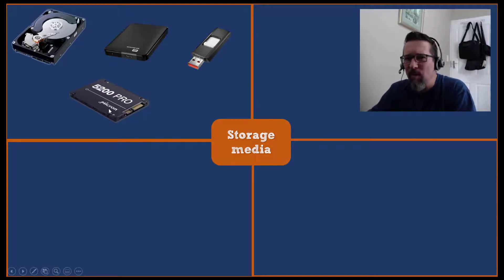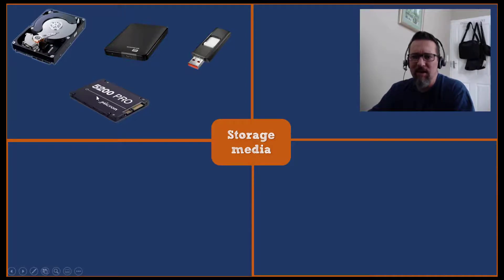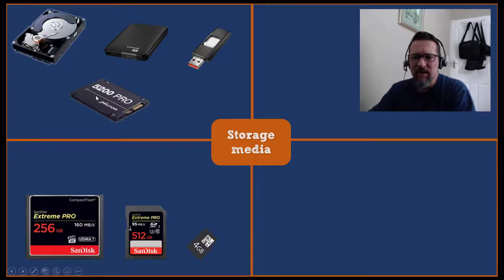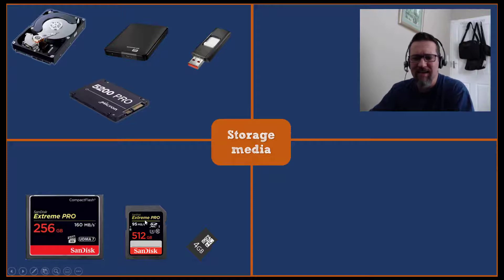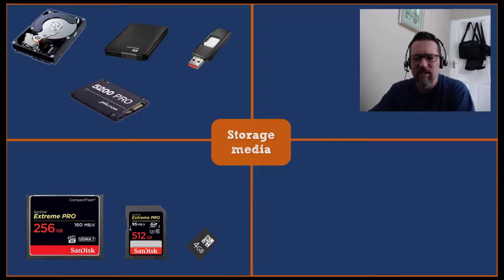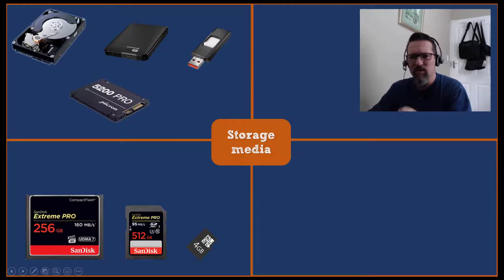And becoming very popular now are SSD drives. Here we have a 500 GB SSD drive — this is an internal drive and they're much, much faster. Here are other storage media we often use for cameras, phones, or tablets: flash cards or compact flash cards, SD cards — SD means Secure Digital — or SDXC. And of course micro SD cards, which you find in phones and tablets as well. So this is another form of storage media.